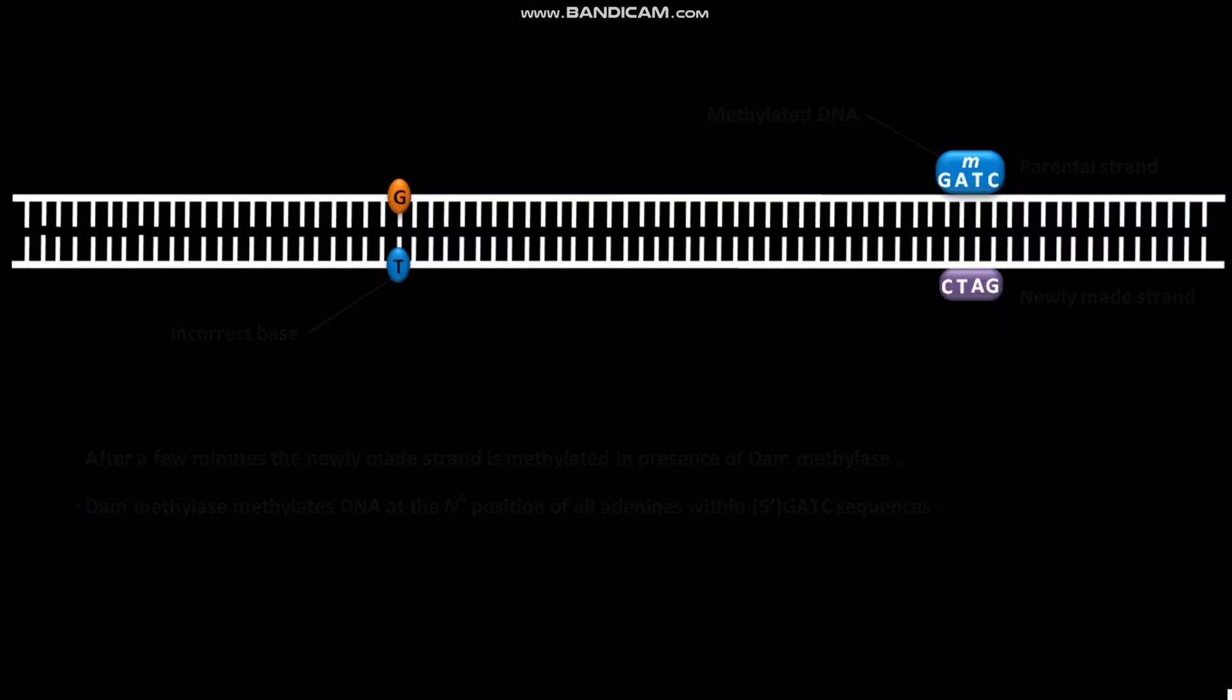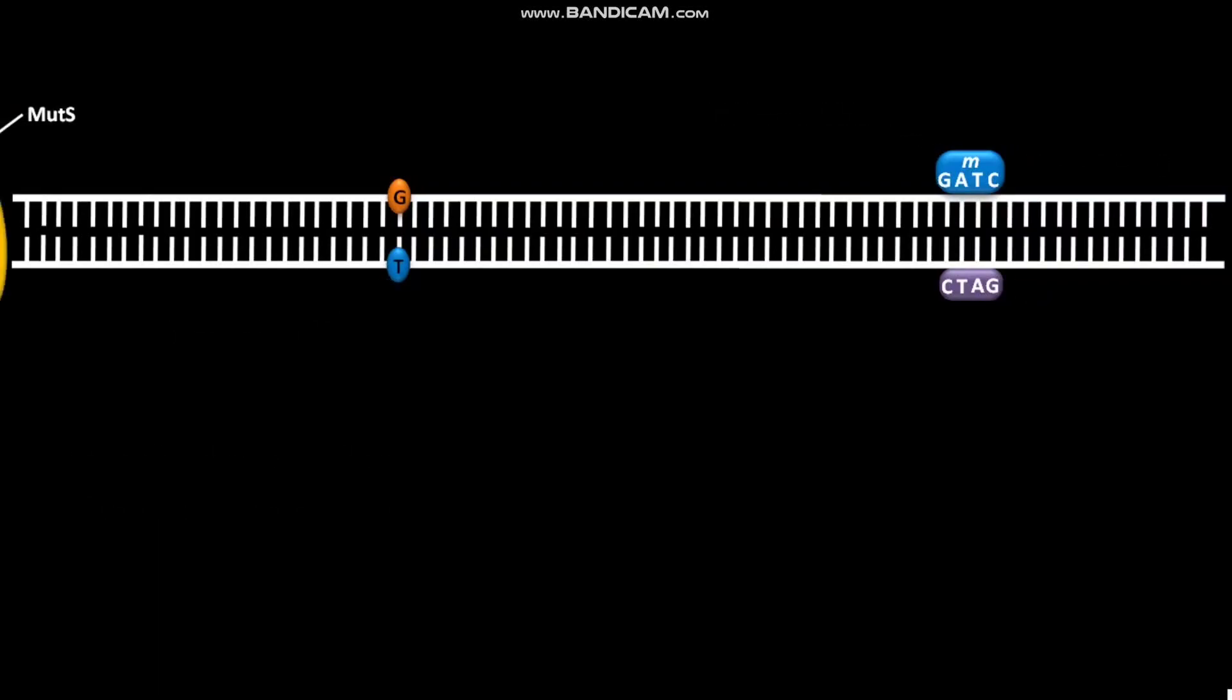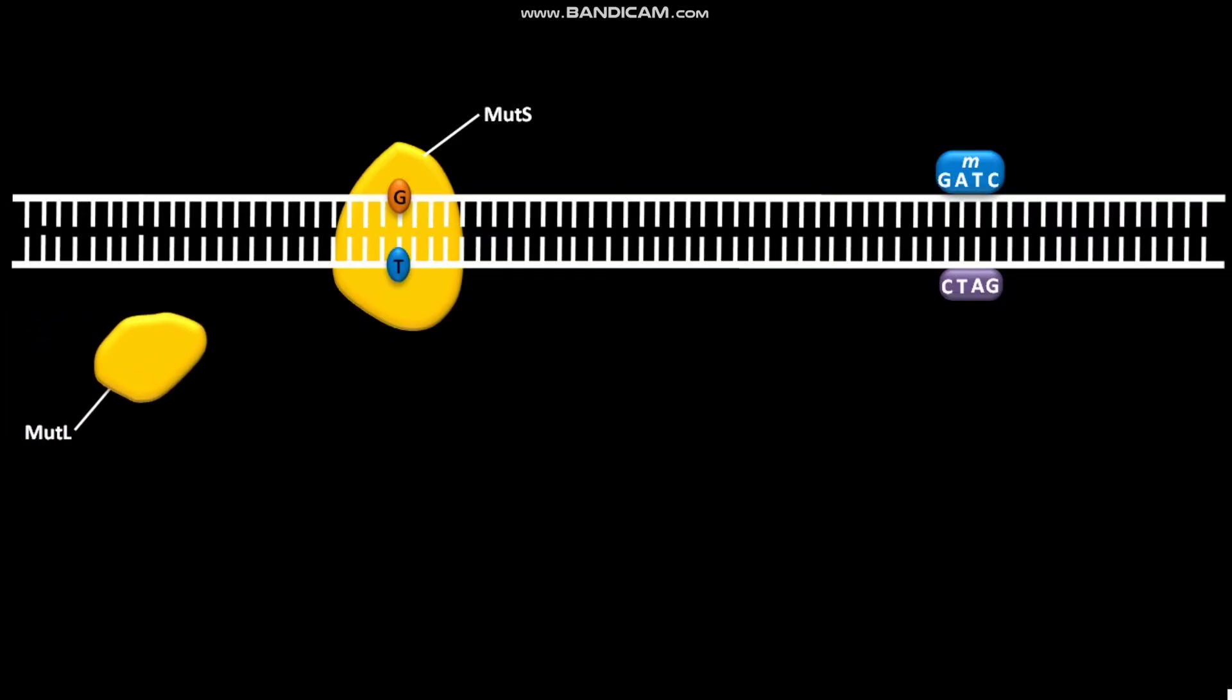Actual recognition of a base pair mismatch is the role of the MutS protein. MutS protein binds to a mismatch site. MutL protein then binds with the MutS protein and forms a MutL-MutS complex. The formation of MutL-MutS complex requires ATP hydrolysis.